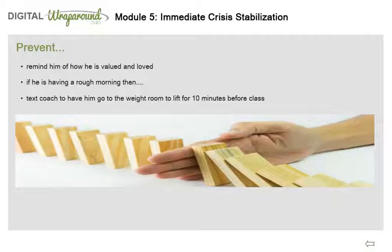Before leaving for school, Mona will assess Matthew's mood. She will ask how he is feeling and remind him of how valued and loved he is. If she determines he is having a rough morning by the way he answers the question, she will text Coach Smith to have him go to the weight room to lift for 10 minutes before class. Matthew will provide short answers, not smile, and roll his eyes to indicate the day may not go well. If he is smiling and silly, playing with his brother, this indicates a good start to the day.